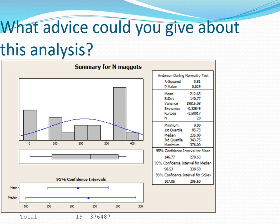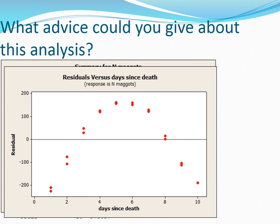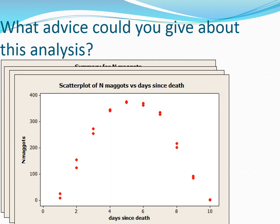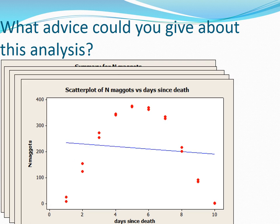The residuals look strange — there's something really weird going on. When we plot the residuals against days since death, what we're looking for is no real pattern, but clearly there's a pattern — a non-linear relationship with those residuals. The residuals themselves are not normally distributed, and the sample size is quite small. The problem is we're trying to fit a single straight line to describe a curvilinear relationship. That straight line is not significantly different from zero, more or less parallel to the x-axis.